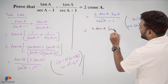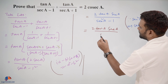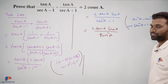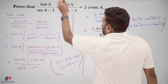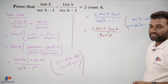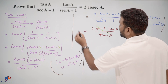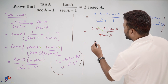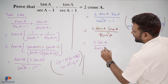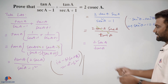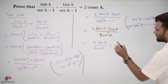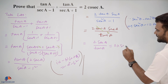So we have 2 tan A into secant A, upon tan squared A. In the numerator and denominator, one factor of tan A cancels, and we are left with 2 secant A upon tan A.